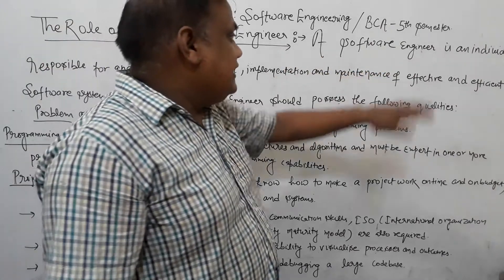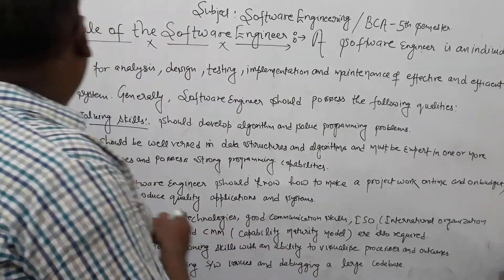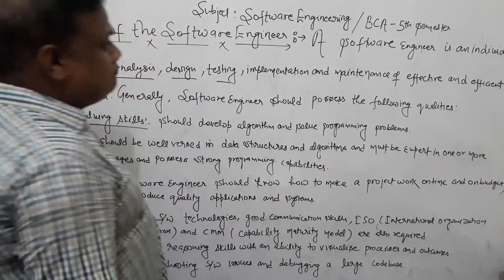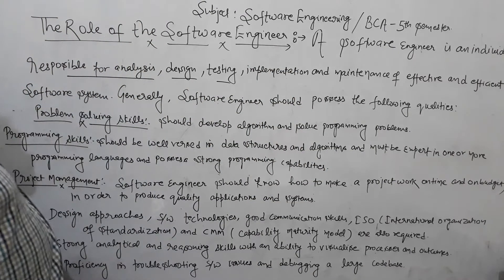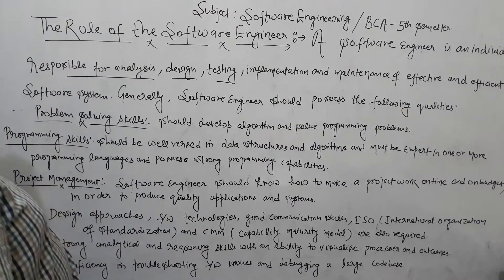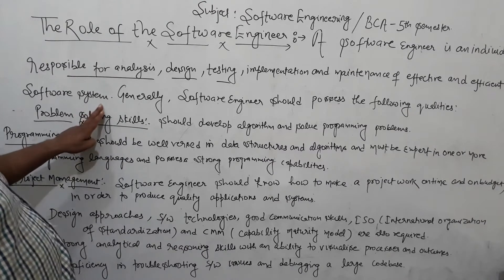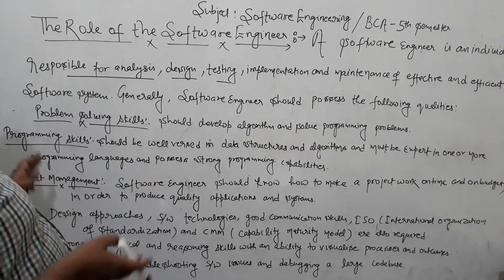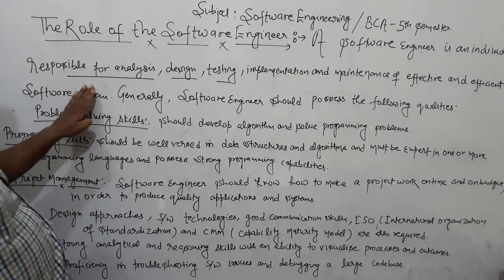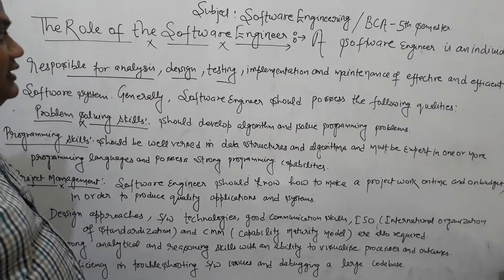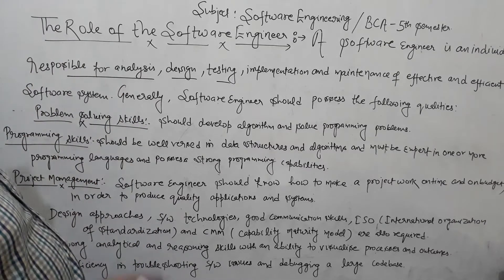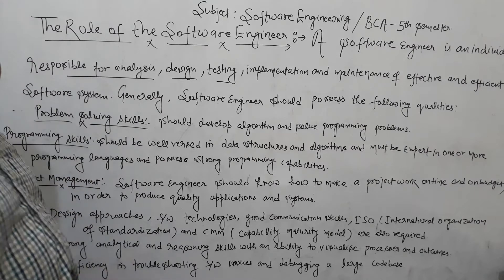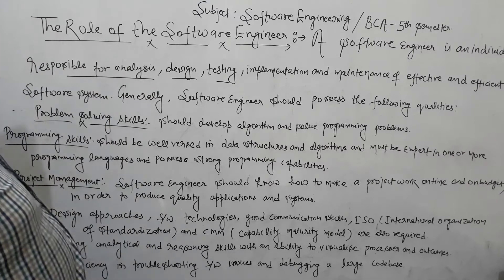A software engineer is an individual responsible for analyzing, design, testing, implementation, and maintenance of an effective and efficient software system. So a person is responsible for analyzing, design, testing, implementation, and maintenance to develop effective and efficient software.